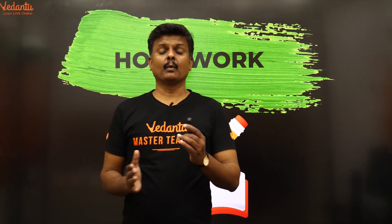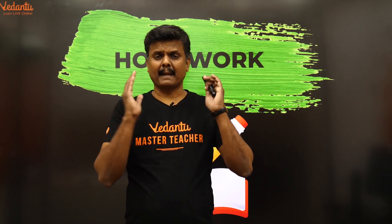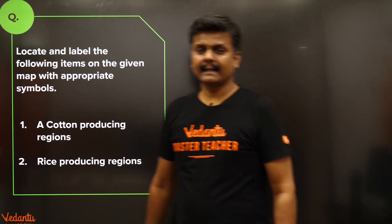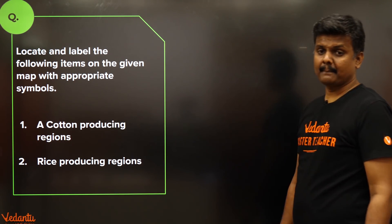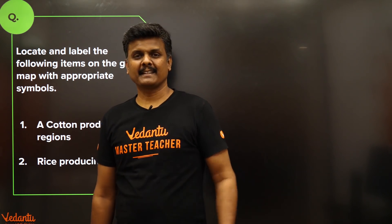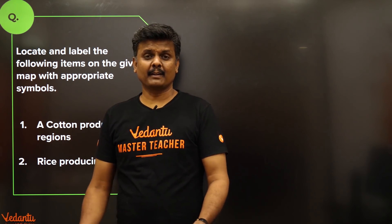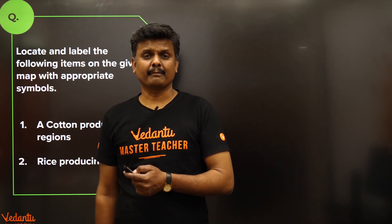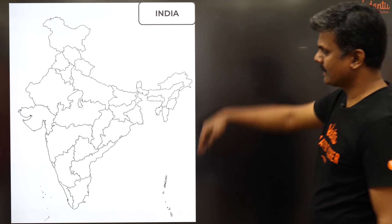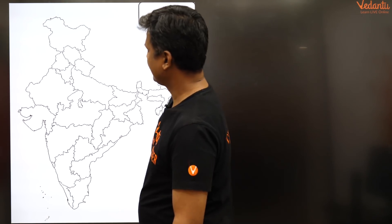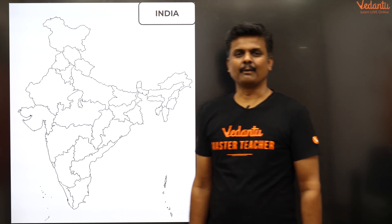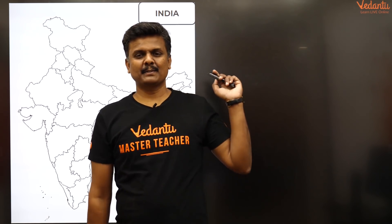Now for your homework: locate and label the following items on the given map with appropriate symbols. First — what are the cotton producing regions? Second — what are the rice producing regions? If you've watched this video carefully, it will be a cakewalk for you.